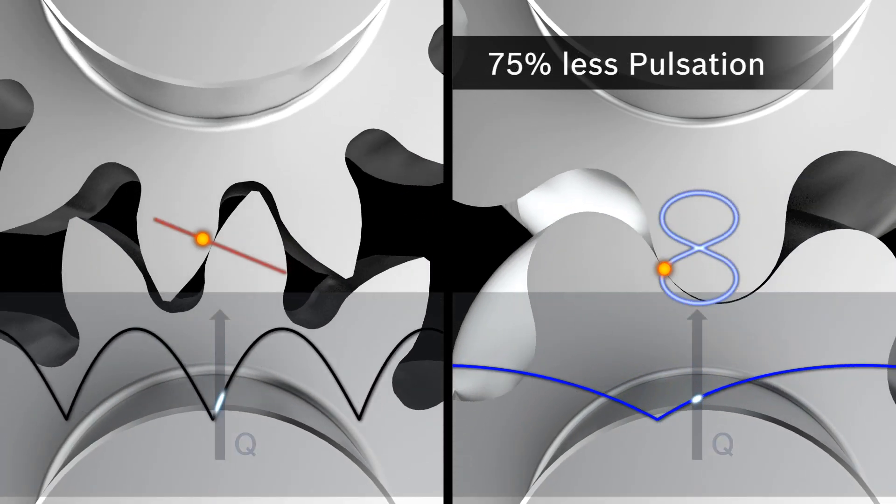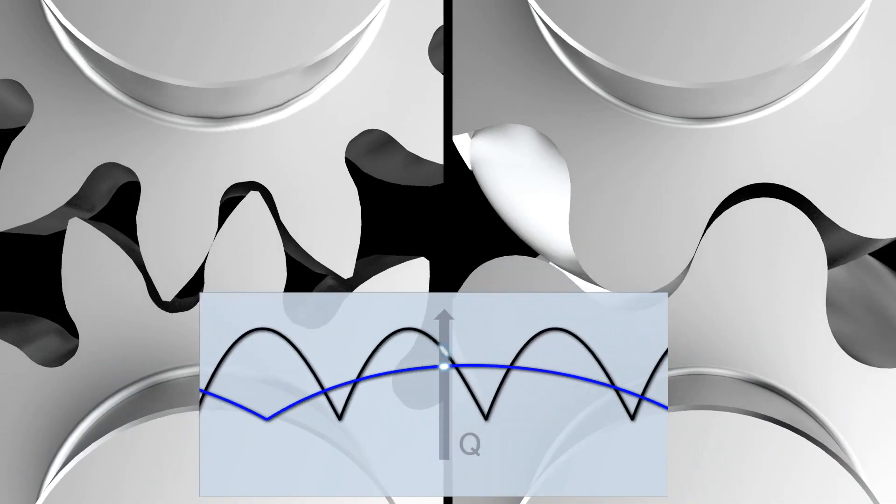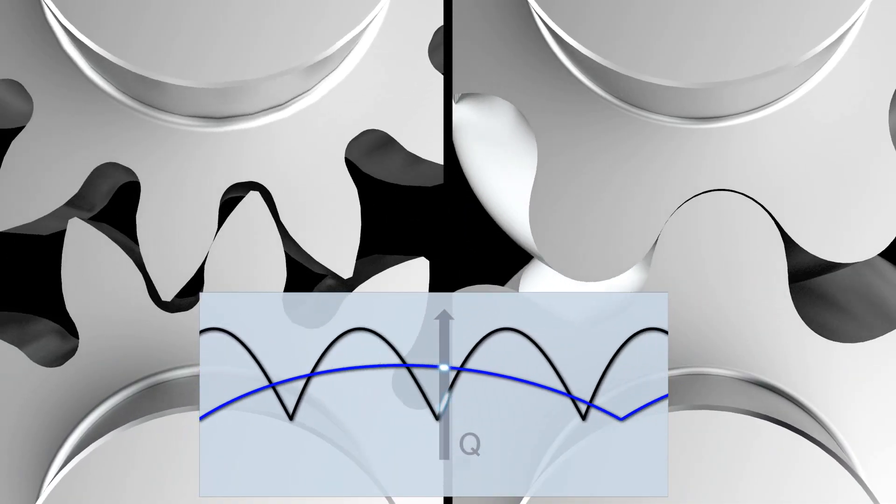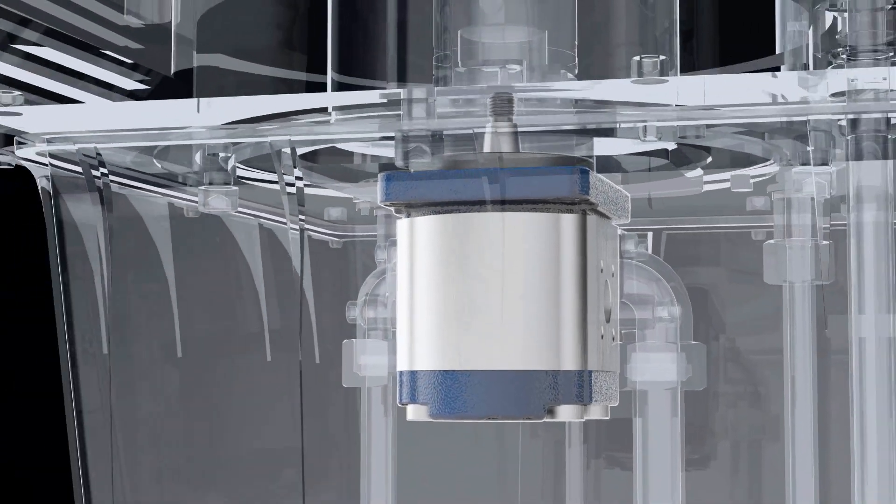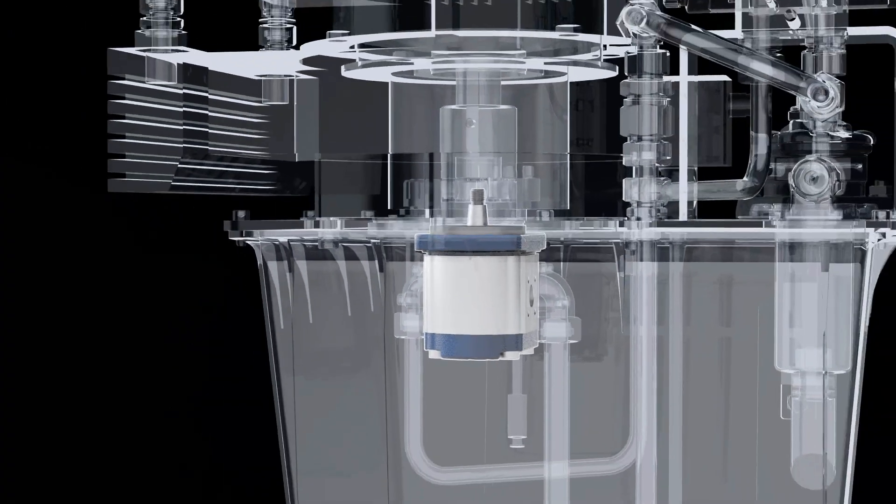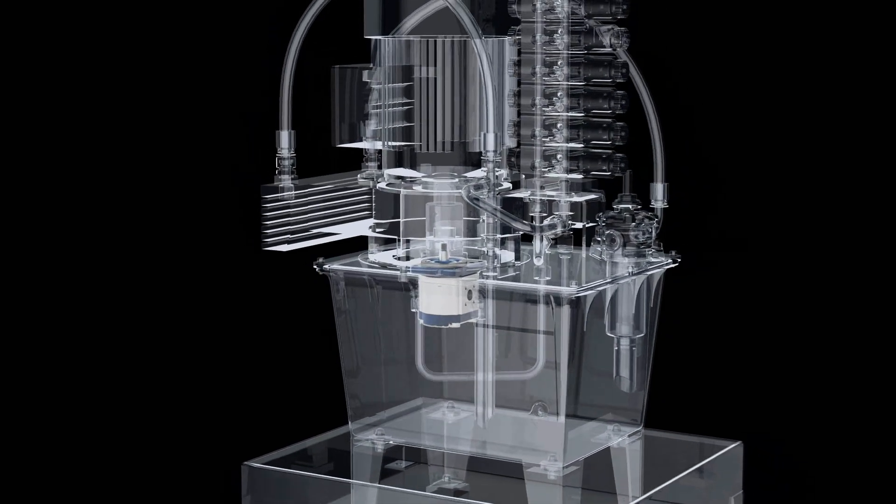Flow pulsation reduced by 75% minimizes vibration in the machine and a 35% lower frequency results in a more pleasant sound. The very low pulsation reduces the vibration tendency of other components in the hydraulic system. This is how Silence Plus ensures greater quiet in the entire machine.